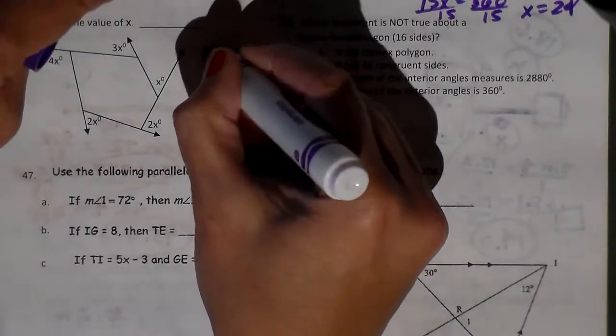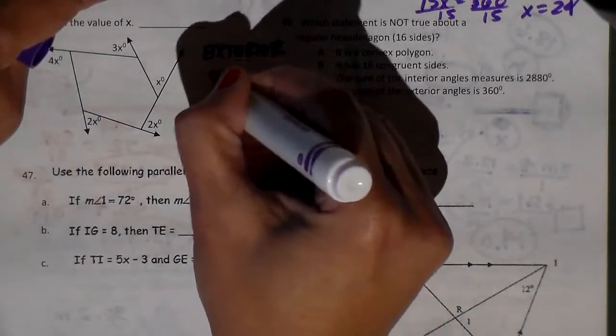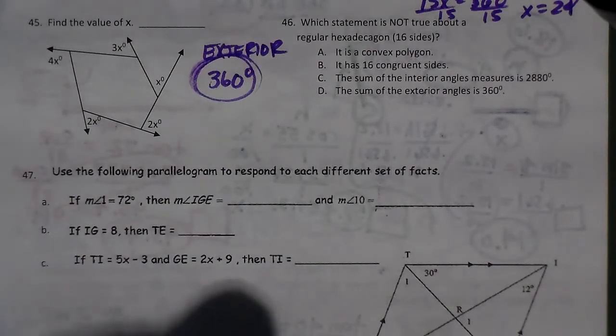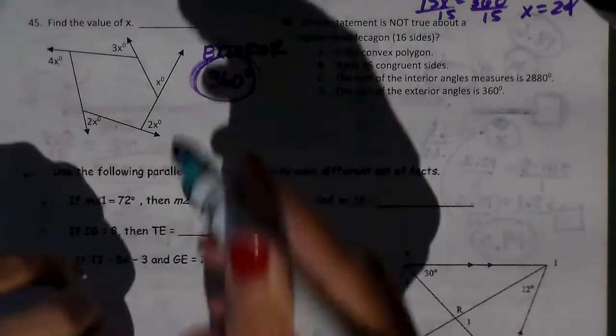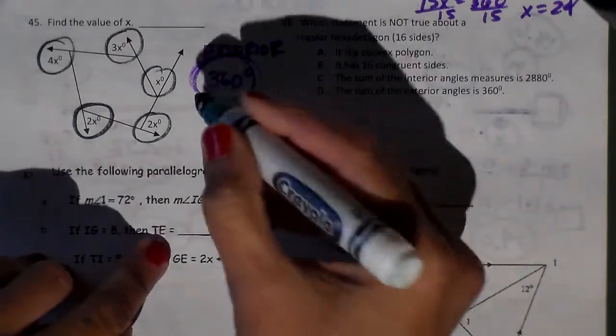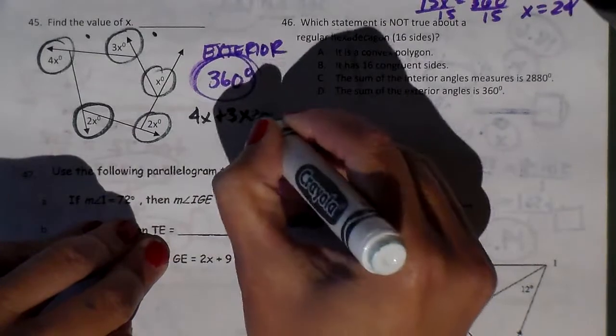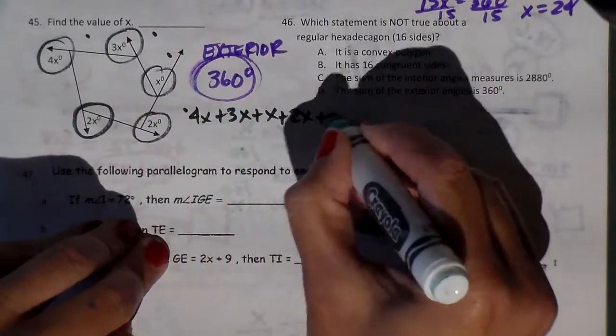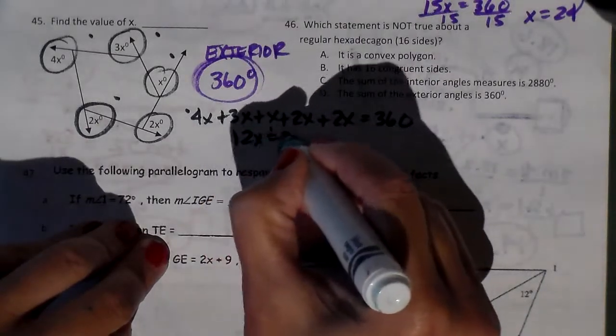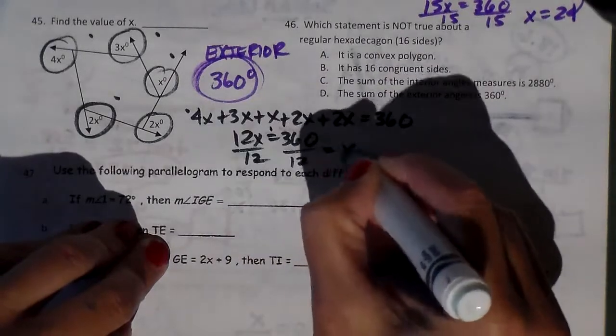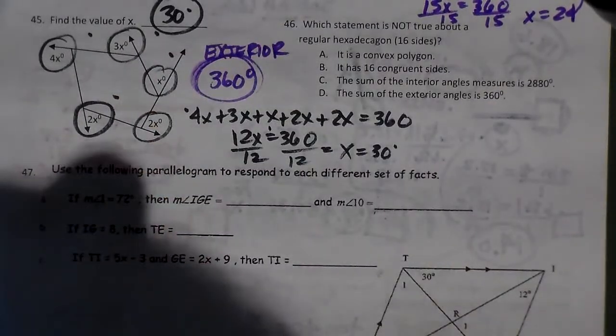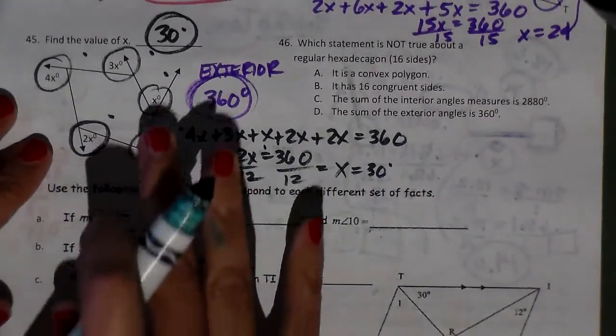So let's move down to this one. Now we're looking at exterior angles. The exterior angle sum of any polygon is always 360. Interior is n minus 2 times 180, exterior is always 360. So I know that all of these guys have to add up to 360. So I know that 4x plus 3x plus x plus 2x plus 2x has to equal 360. So I have 4 plus 3, which is 7, 8, and 4 is 12. So 12x equals 360, I divide both sides by 12, and x equals 30. So if x is 30, it's just asking you to find the value of x here, so you don't have to solve for the rest of the angles. Once I have the 30, I'm done.